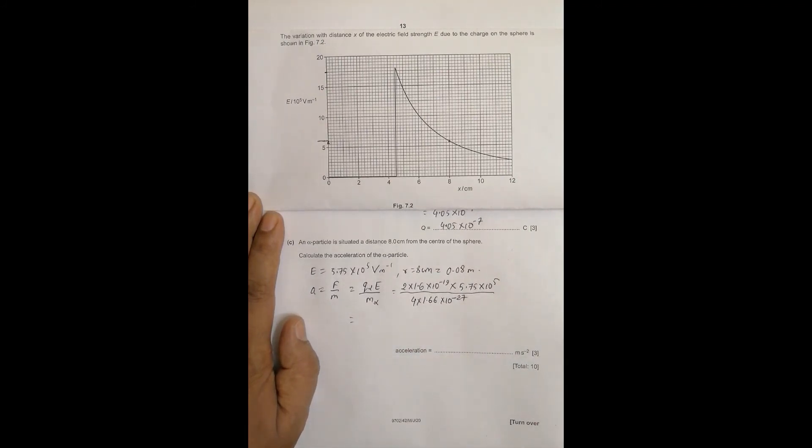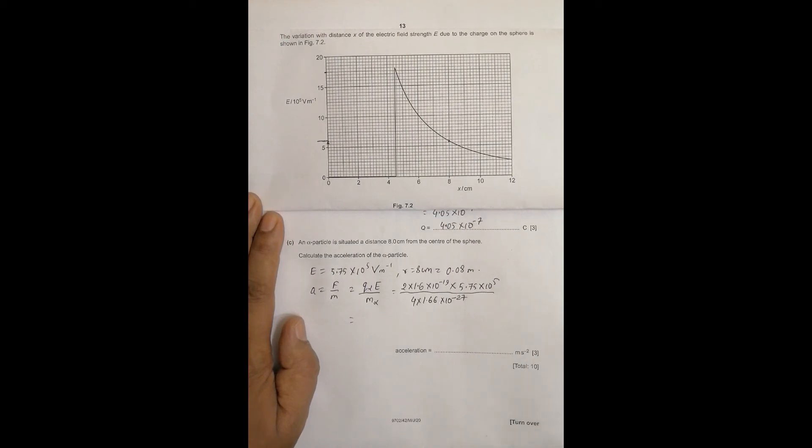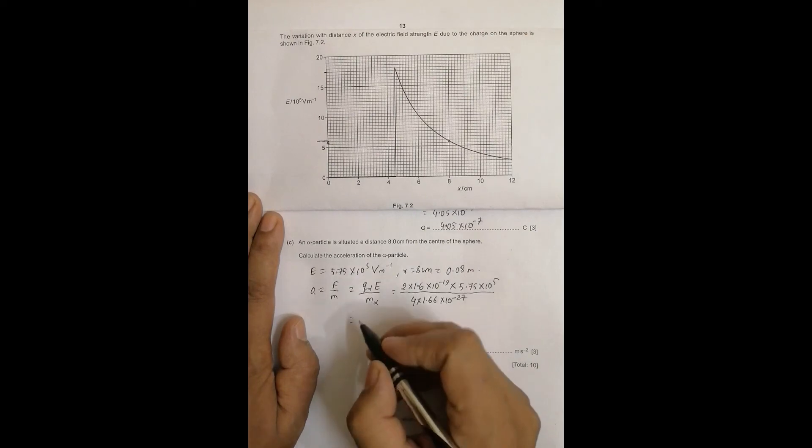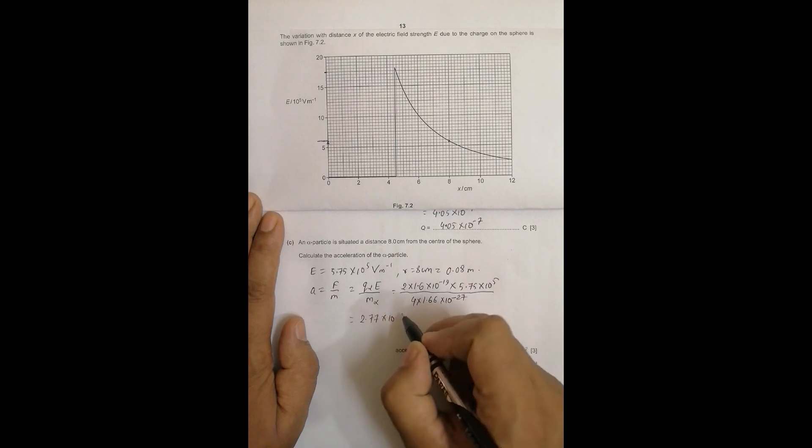Let's do it, so we'll have 2 into 1.6 exponent minus 19 into 5.75 exponent 5 divided by 4 divided by 1.66 exponent minus 27. This becomes 2.77 into 10 to the power 13 meter per second squared.